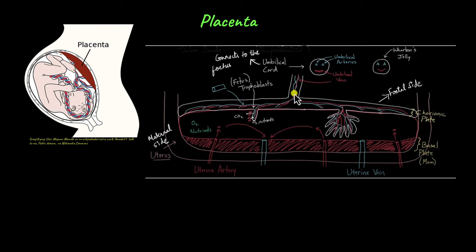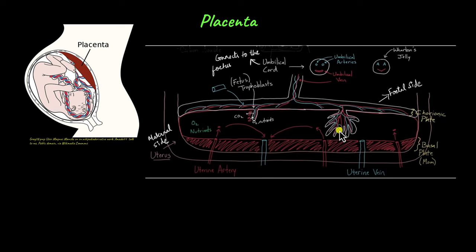The umbilical vein transports the oxygen and nutrient-rich blood to the fetus. From the fetus, umbilical arteries bring back oxygen-depleted, carbon dioxide and waste-rich blood. This carbon dioxide and waste diffuses into the surrounding space and is picked up by the uterine vein. The placenta acts like a barrier between the fetal circulation and the maternal circulation, not allowing both circulations to directly come into contact, serving as an interface between the mother and the developing fetus.